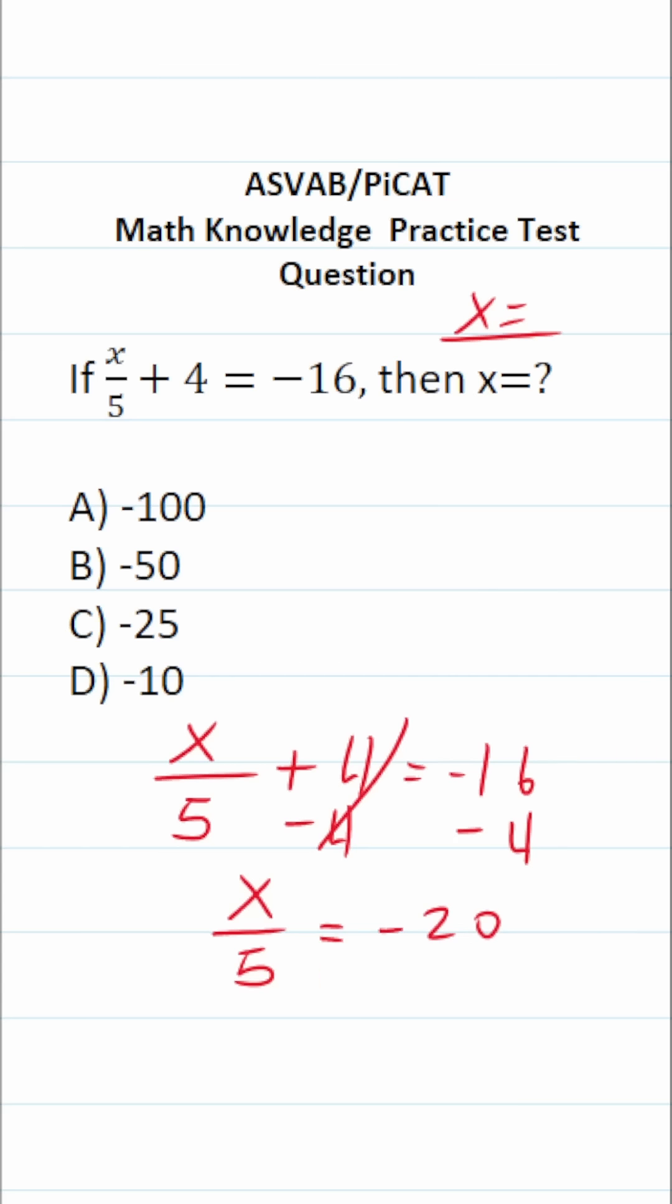To clear 5 from the denominator of x, we're going to multiply both sides by 5 next. In doing so, this crosses out, leaving us with x. Negative 20 times 5 is negative 100. Again, a negative times a positive is a negative. So we can see x is negative 100, which is answer choice A.